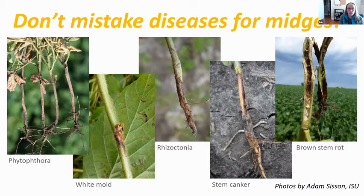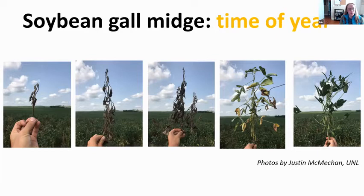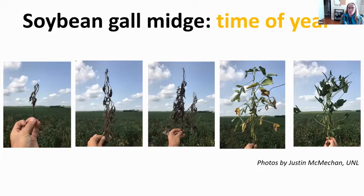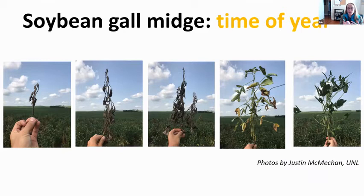We're still trying to understand if there's a synergistic relationship in yield impact when you have both disease and midge at the same time. Most of our preliminary research has been focused on midges only. Plants can get infested almost any time — we've seen them as early as V2 or V3 through the entire vegetative stage, and they can also get first infested in the reproductive stage. This usually happens more in the field interior. Depending on maturity groups, you could still see larvae feeding into September, with larvae still feeding around the base of the soil as plants have reached full seed set and are starting to senesce.